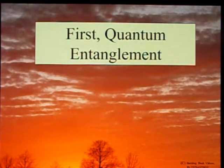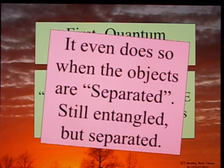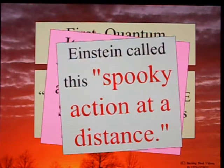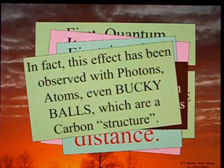First, quantum entanglement. When two objects are entangled, affecting one of the objects also changes the entangled twin. It even does so when the objects are separated. Still entangled, but separated. Einstein called this spooky action at a distance. I'm being lazy, but you can find MIT open courseware that explains this fully. In fact, this effect has been observed with photons, atoms, even buckyballs, which are a carbon structure.